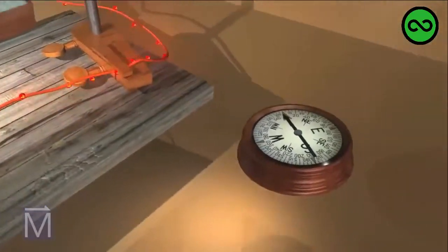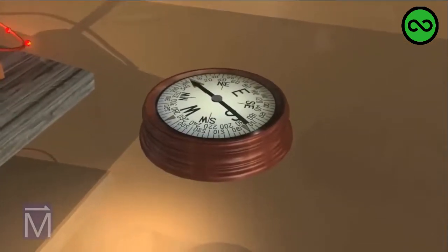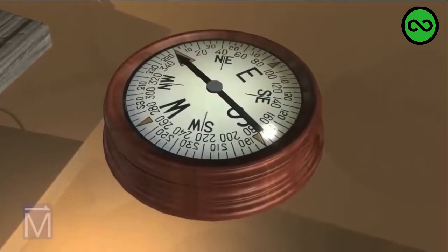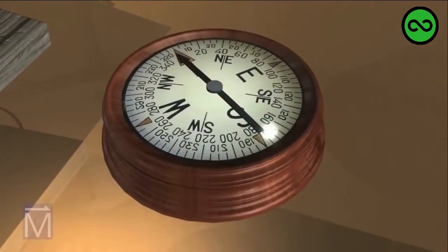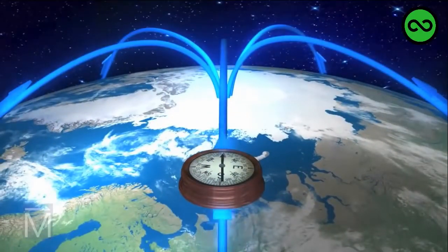Back then, scientists still had much to learn about electricity. Preparing for his lecture, Ørsted made a very important discovery about the phenomenon quite accidentally. Among Ørsted's scientific paraphernalia was a compass. Its needle, of course, pointed north in alignment with the Earth's magnetic field.